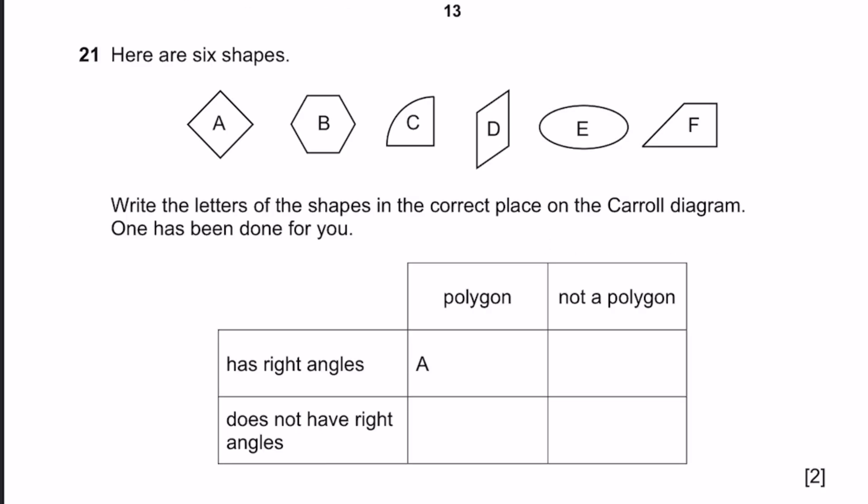Question 21. Here are 6 shapes. Write the letter is in the correct place on the Venn Diagram. One has been done for you. Polygon A has right angles. Which other one has right angles? F and C. So C and F. But are both of them polygons? Well, C is not a polygon, but F is. F is a trapezium. C is not a polygon because it has a curved side. Does not have right angles are B, D, and E. And out of this, B and D are polygons, while E is not a polygon because of the same reason. This has curved sides. These two do not.